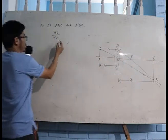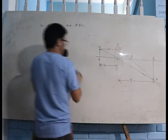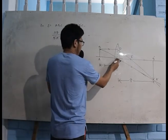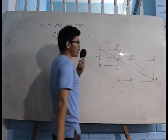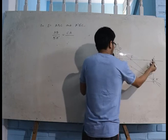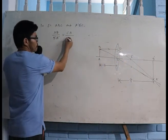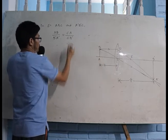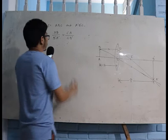So we write: AB divided by B'A' is equal to the base of the first triangle CA divided by the base of the other triangle CB'. This is our first equation.